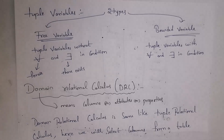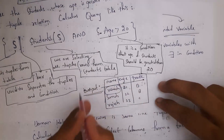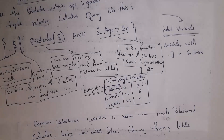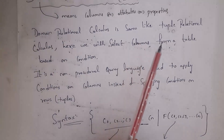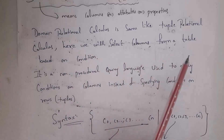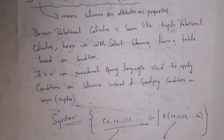Next I will explain what is domain relational calculus. Whereas tuple means rows or records, domain means columns. If I don't want to select a complete record and just want to select the name column, I can use domain relational calculus. Domain relational calculus is similar to tuple relational calculus, but here we select columns from a table based on a condition. It is also a non-procedural query language — it focuses only on what to do and not how to do it. In domain relational calculus, we apply the condition on columns, not on tuples.